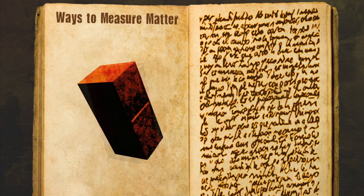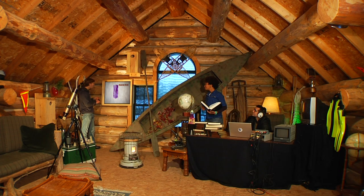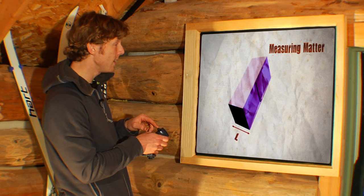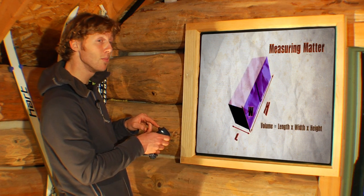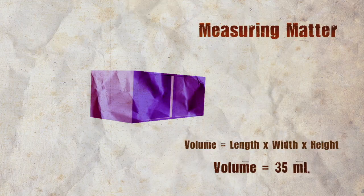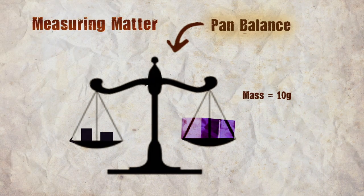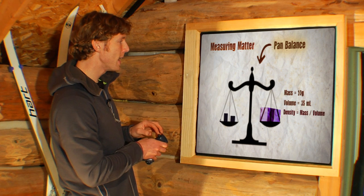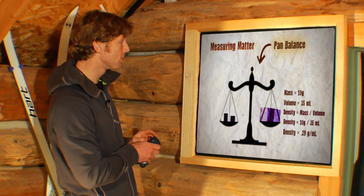You could, for example, measure its length, width, and height with a metric ruler, or its mass with a balance. And once you know the length, width, and height, you can calculate the volume of an object like this. You can use a balance to measure the mass of an object. And once you know the volume and mass, you can calculate an object's density.